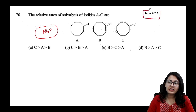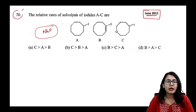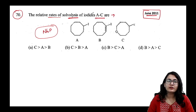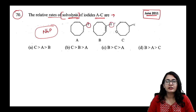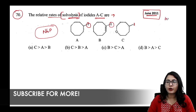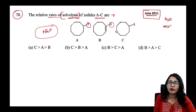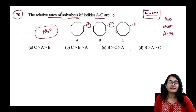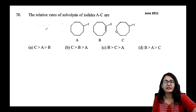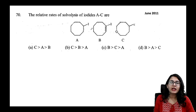This first question was asked in the June 2011 CSIR NET examination. It asks for the relative rate of solvolysis of iodides A to C. Solvolysis means the iodide is replaced by a solvent molecule: with water it's hydrolysis, with methanol it's methanolysis, with acetic acid it's acetolysis.